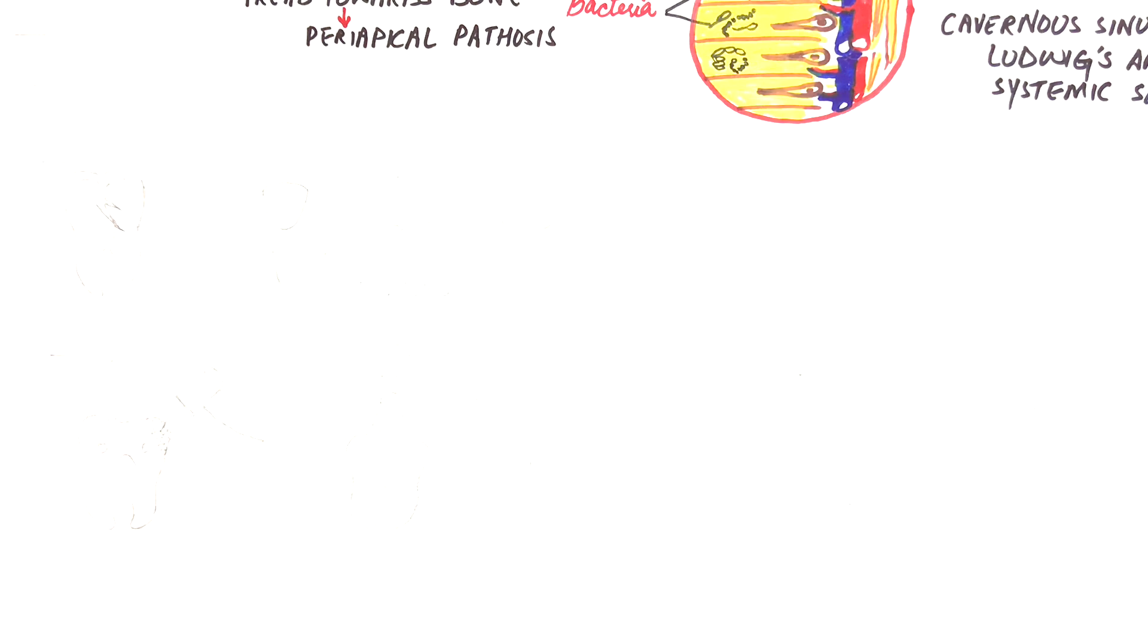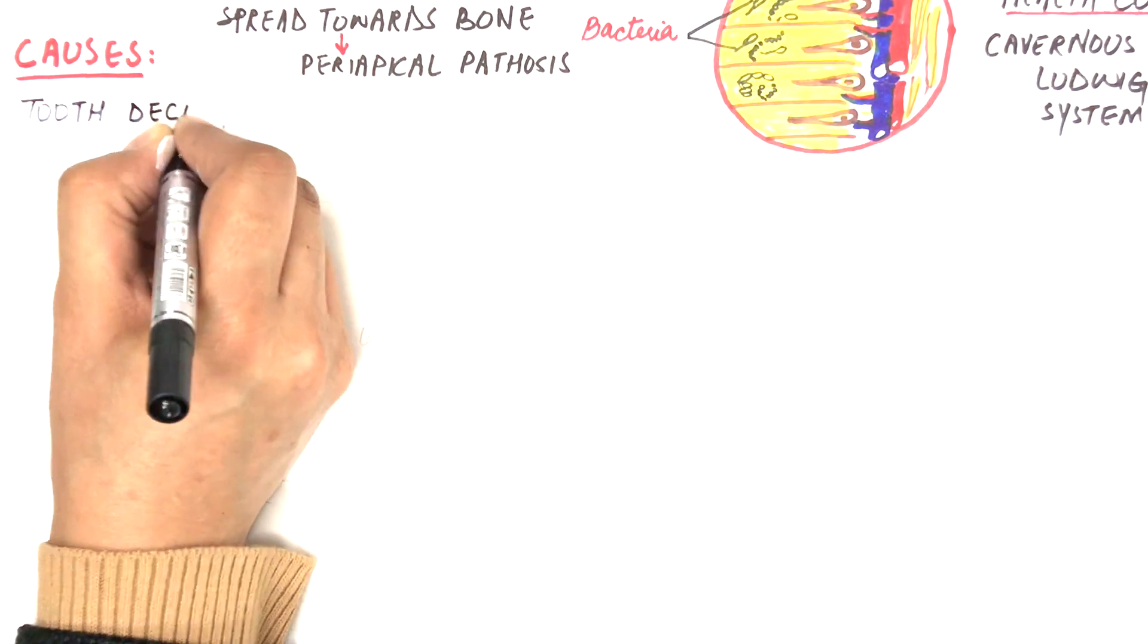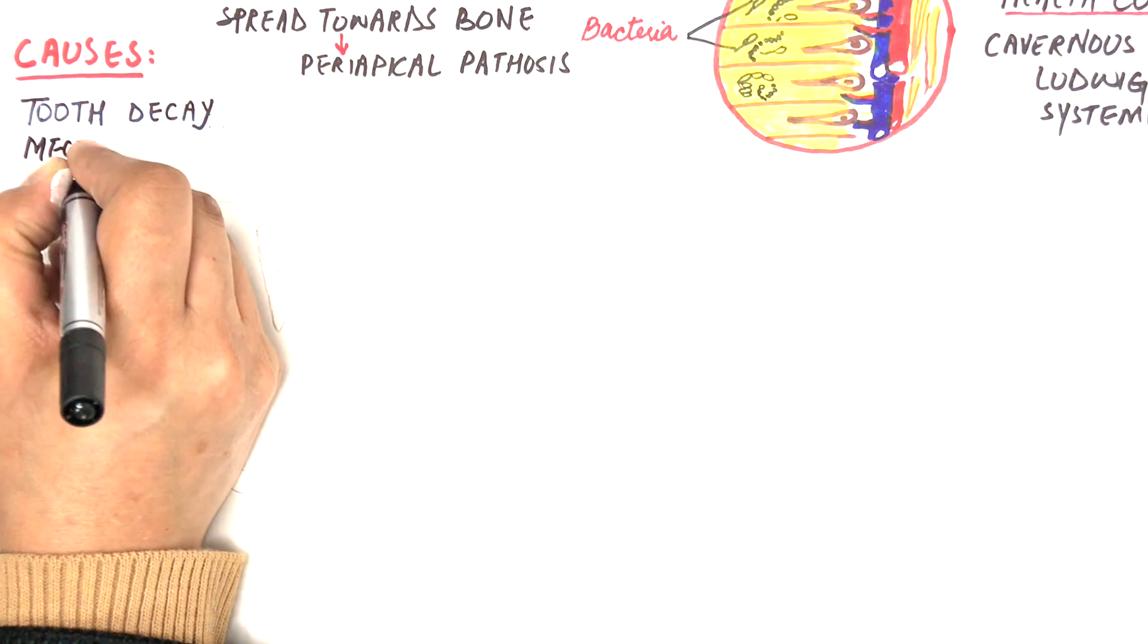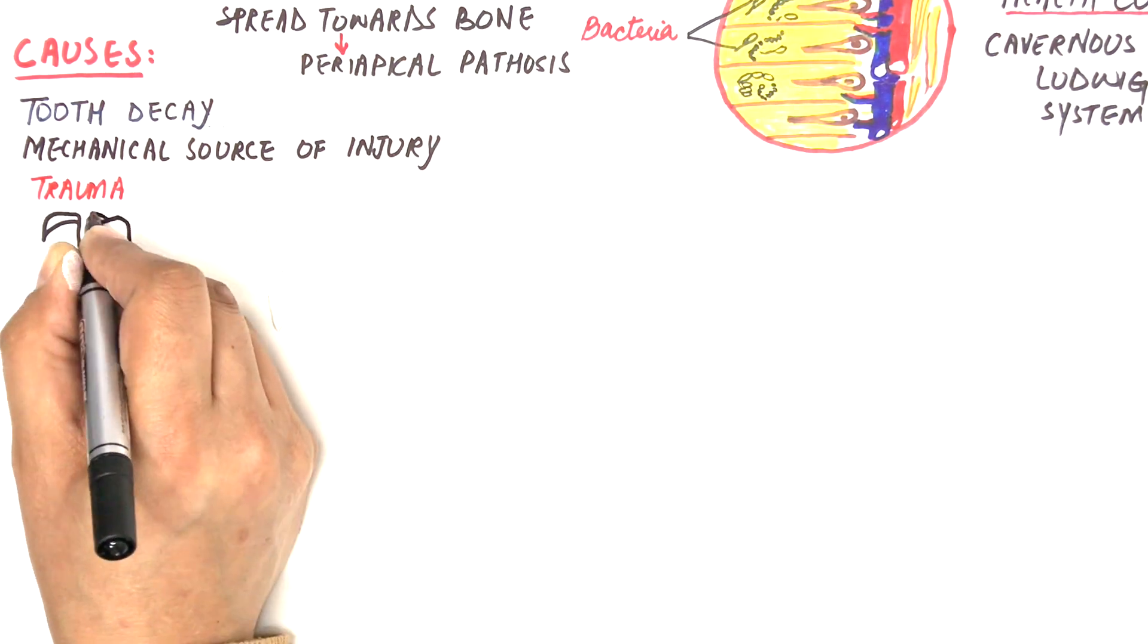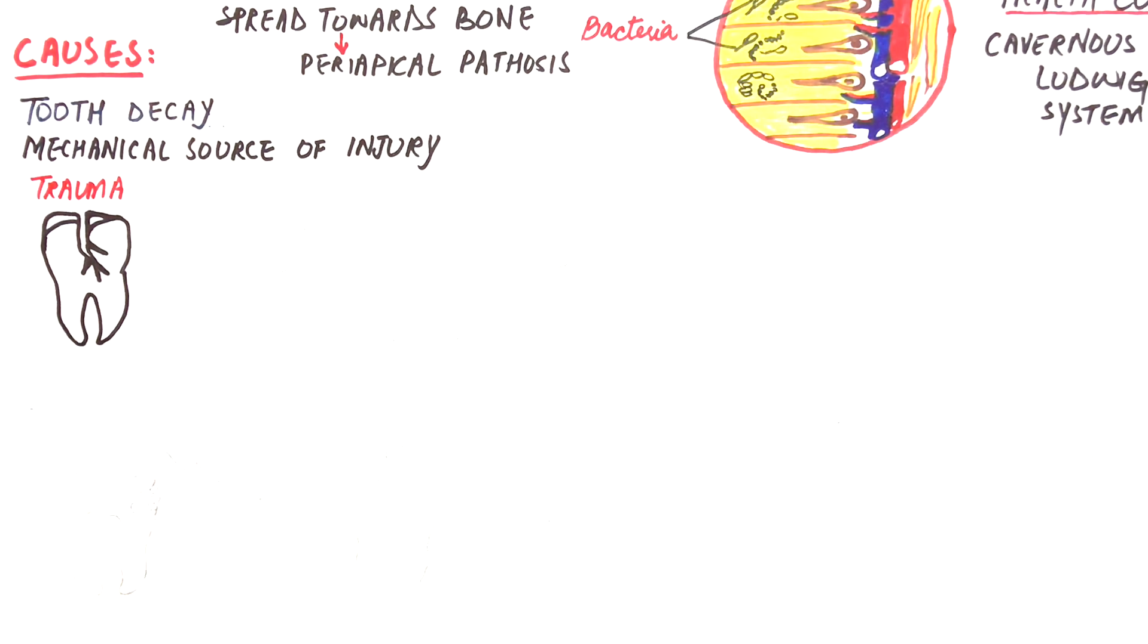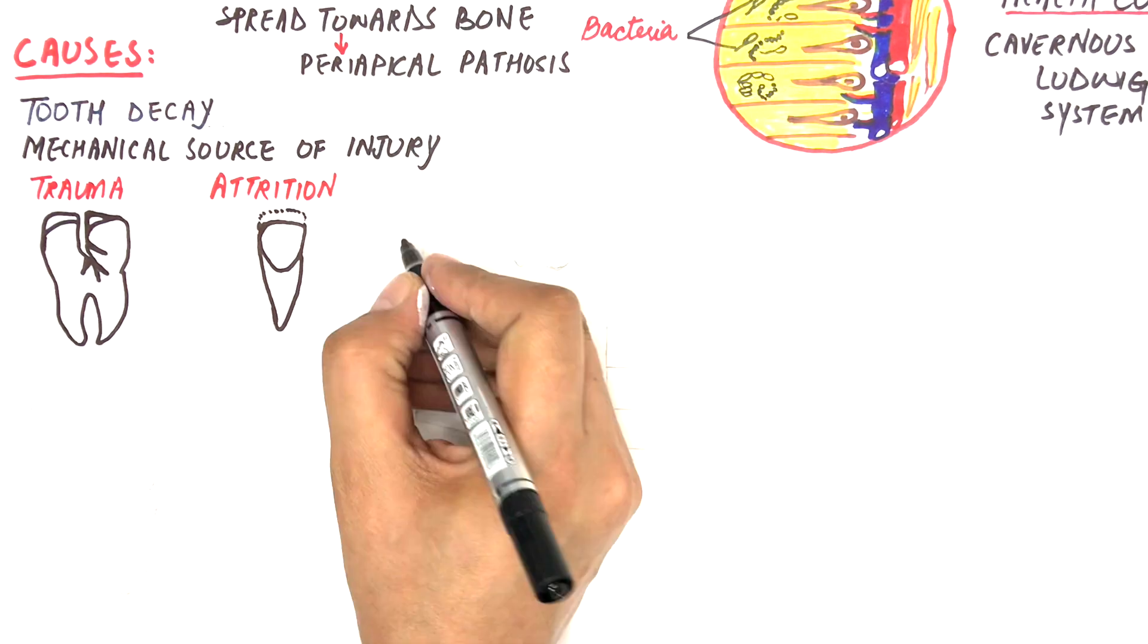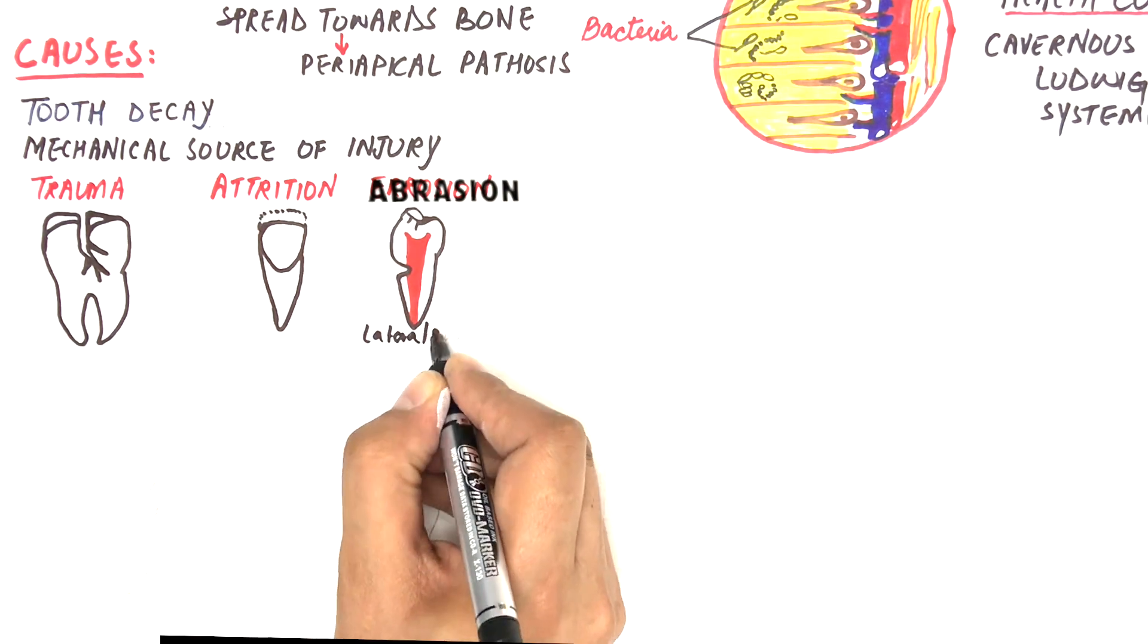The number one most common cause of pulpal inflammation is tooth decay. Other causes of pulpitis are listed as follows. Mechanical sources of injury which includes traumatic accidents causing tooth fractures, attrition, abrasion and iatrogenic damage from dental procedures like tooth scaling.